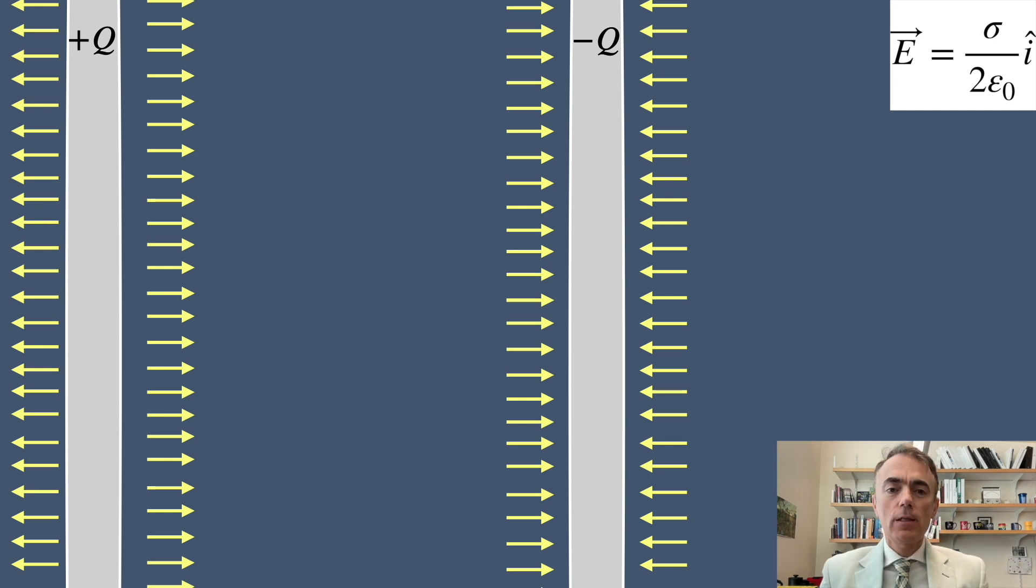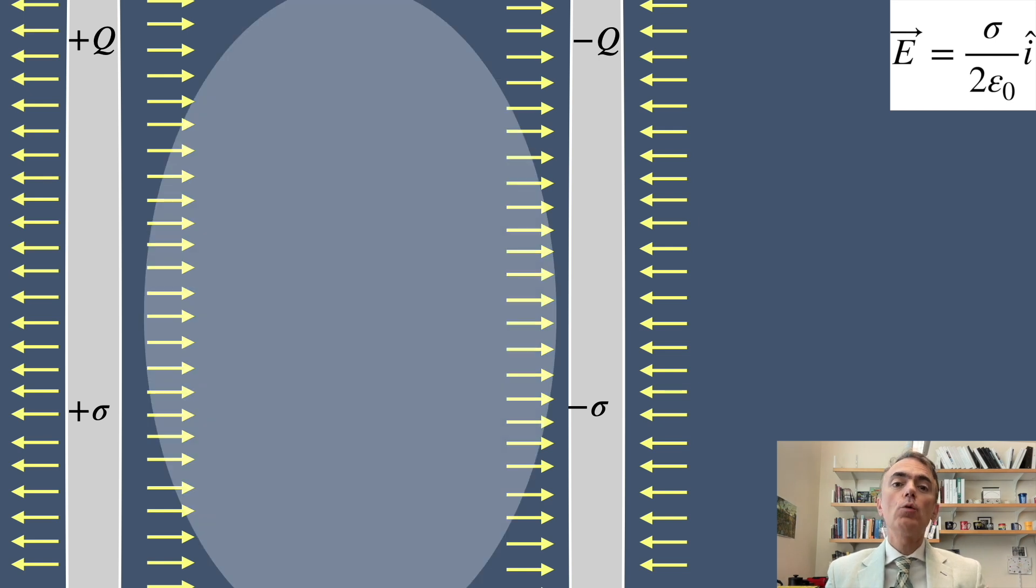The positive plate has a surface charge density plus sigma and the negative plate has minus sigma. The key idea here is that the electric field lines from these two plates combine to create the overall field between them.